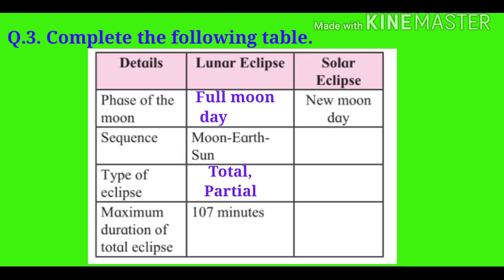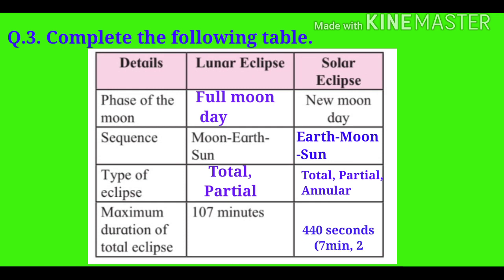Solar eclipse — Phase of the moon: new moon day. Sequence: the earth, the moon and the sun. Type of eclipse: total, partial and annular. Maximum duration of total eclipse: 442 seconds.